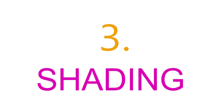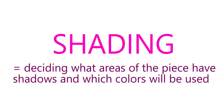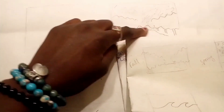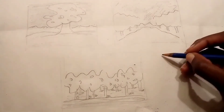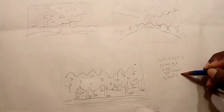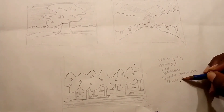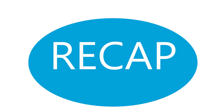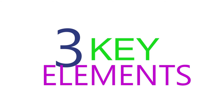And third, we have shading. Shading is deciding what areas of the piece have shadows and which colors will be used. Creating a list of proposed colors for your work will really help you avoid the drama of not knowing what you want to use in your piece when it comes time to color it.